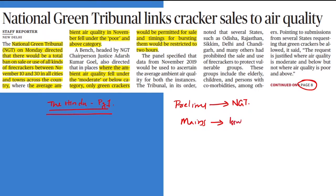Regarding Mains, you need to identify the issue of air pollution. Yesterday in the current affairs session we identified the issue of air pollution in Delhi. Similarly, you should identify the issue of air pollution in all major cities and regions of India connected with crackers — why crackers and the Diwali season are causing severe air quality deterioration. For Prelims, go through what is green crackers and their specialities. You can give green crackers as an example in ecology and environment questions. Learn these ideas from Google search.